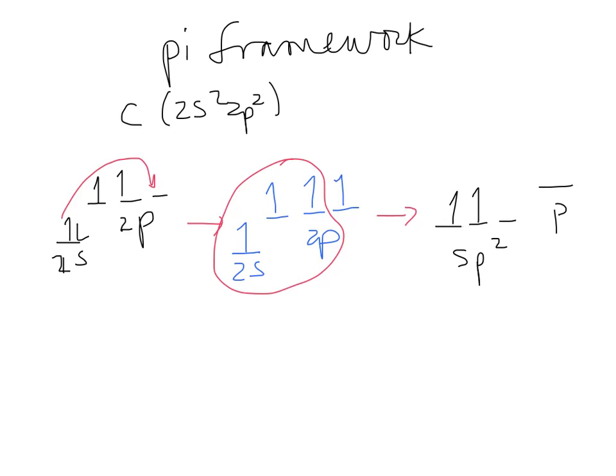Okay, SP2 hybrids, and then there's going to be a P left over. So we have 1, 2, 3, 4. So the SP2s are going to be involved in sigma bonding. The P is going to be involved in pi bonding.